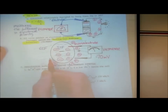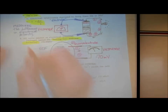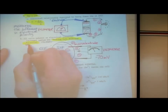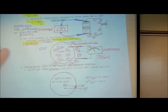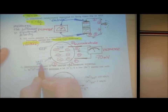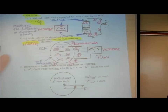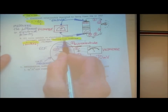It's called the cell membrane potential — potential means voltage, and electrical potential is a voltage. It's called 'cell membrane' because this difference in electrical polarity exists across the cell membrane: on one side it's positive and on the other side it's negative. That's why it's called cell membrane voltage, or cell membrane potential.